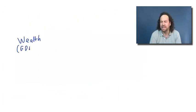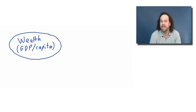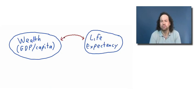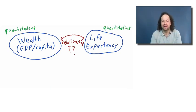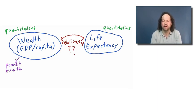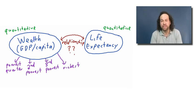Now you might think that the more wealthy a country is — the higher the GDP per capita — that might mean the higher the life expectancy as well. So how can we examine this relationship? Life expectancy and GDP per capita are both quantitative variables. One thing we could do is convert the wealth variable into a categorical variable by breaking up all the countries and territories into four different categories: the poorest quarter, the second poorest quarter, the third poorest quarter, and finally the richest quarter.